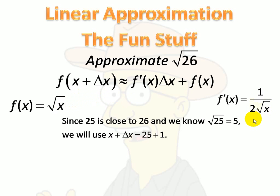Okay. Now, here's the thing. Since 25 is close to 26, and we know the square root of 25, we will use this: x plus delta x is 25 plus 1. In other words, since we're trying to approximate 26, and we don't know what it is, we know what the square root of 25 is. It's 5. So I'm going to pick this number, which is close to 26, to help me get an approximation. We'll see how it works.